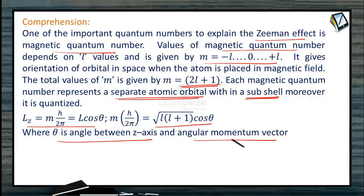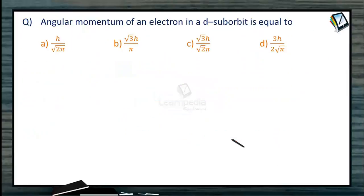Then answer the following questions. Question 1: Angular momentum of electron in a d-suborblt is equal to? When it is d-suborblt, in other words d-sublevel, we can understand L = 2.